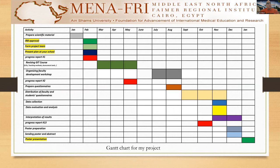After that, we will distribute already prepared questionnaires after finishing the GIT course this year for faculty and student satisfaction. Then data collection, evaluation, analysis, and interpretation of results will be in September, October, and November 2021. The third progress report will be submitted in October 2021.